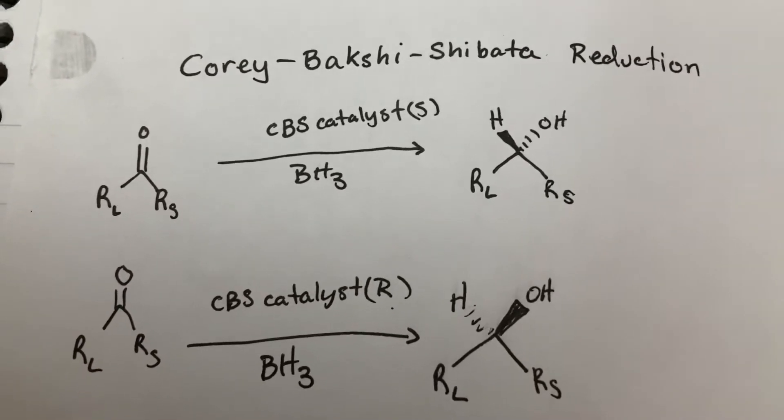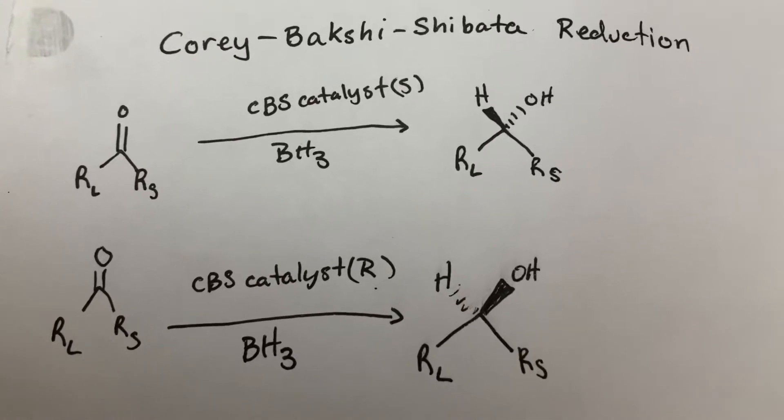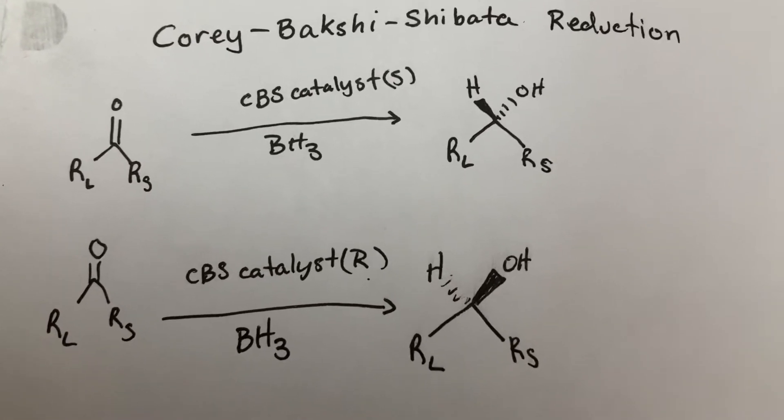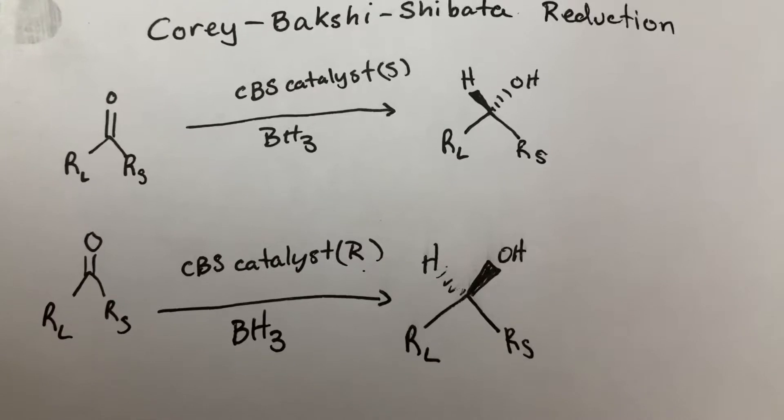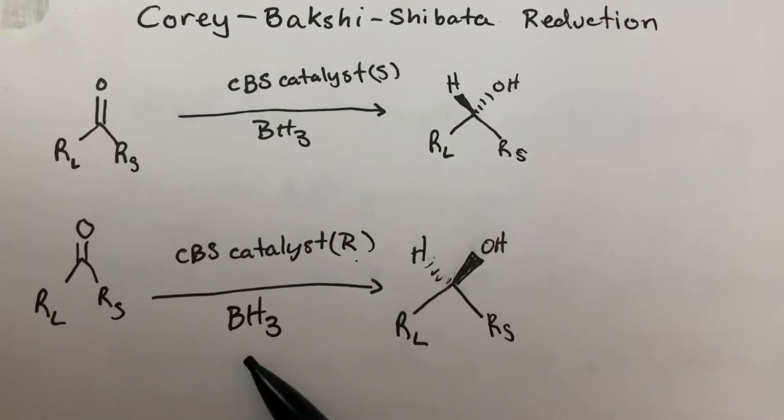The Corey-Bakshi-Shibata reduction, also known as an Itsuno-Corey reduction, is an enantioselective reduction of ketones using a borane and a chiral catalyst.